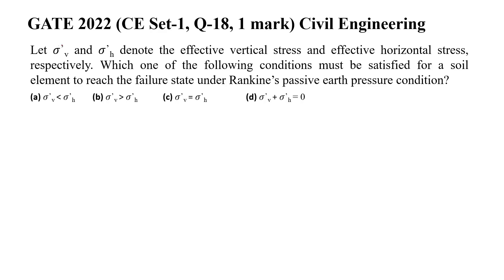Let us look at question number 18 from Set 1 of the Civil Engineering GATE 2022 paper. The question states: Let σv' and σh' denote the effective vertical stress and effective horizontal stress respectively. Which one of the following conditions (A, B, C, D) must be satisfied for a soil element to reach the failure state under Rankine's passive earth pressure condition?